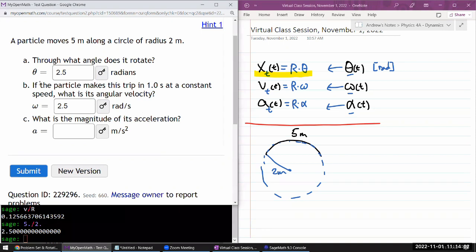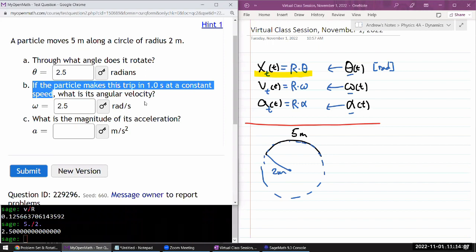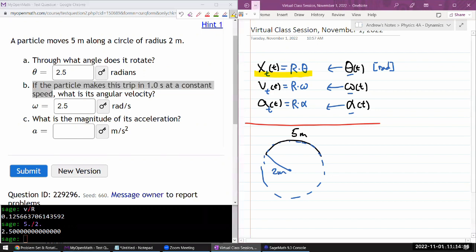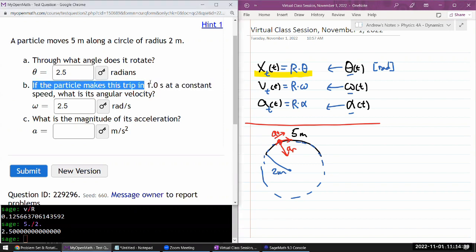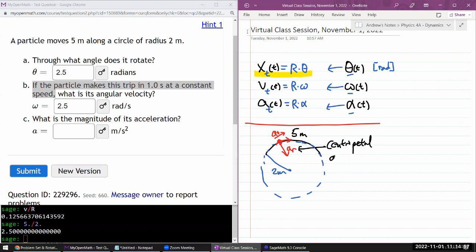What is the magnitude of its acceleration? I have to think of its acceleration in two components. Imagine a particle moving this way. It's going to have tangential component of acceleration and radial component of acceleration. The tangential part will be zero if the particle is making this trip at constant speed. Then the tangential acceleration will be zero because this is zero.